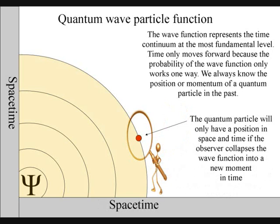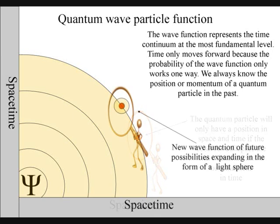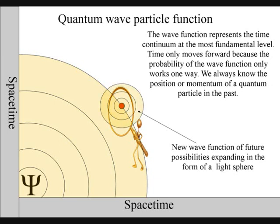When it does this, it will form a new quantum of energy in the form of a photon that will have a unique position in space and time that the wave function never had before the collapse. In this way, the forward momentum of light forms the passage of time.